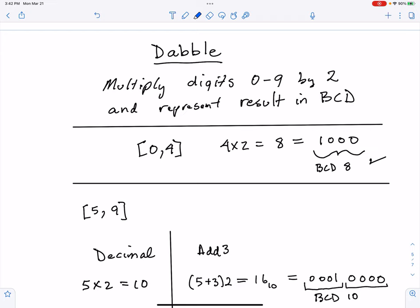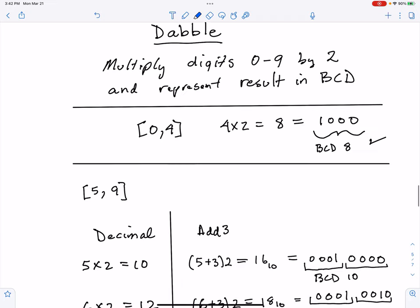So the dabble technique applies, and the overall goal here is we want to multiply digits 0 through 9 by 2 because of the doubling method and represent that result in binary coded decimal BCD. So let's get started.